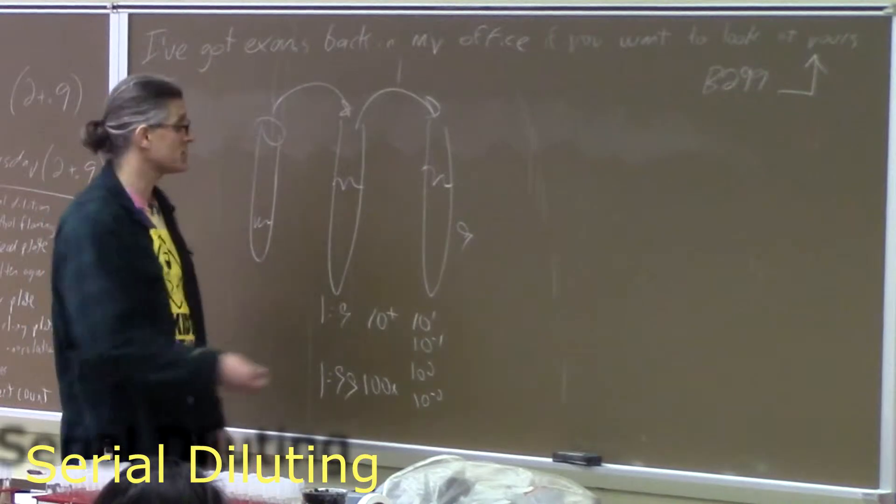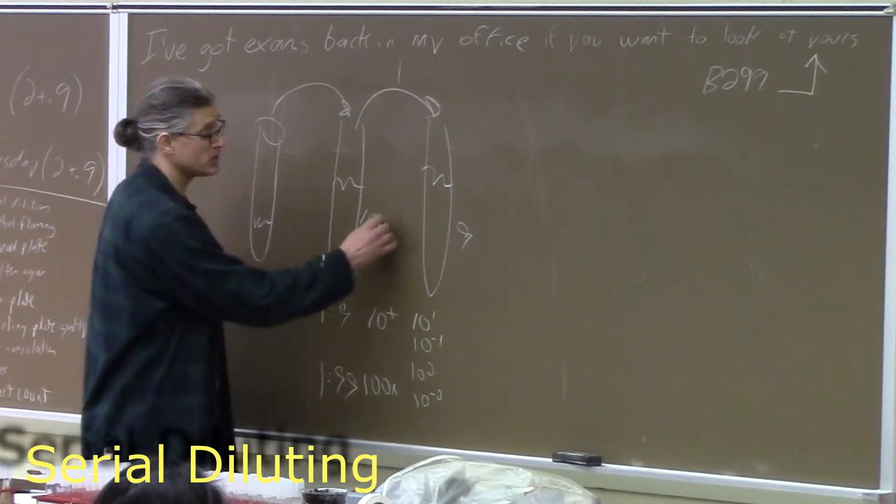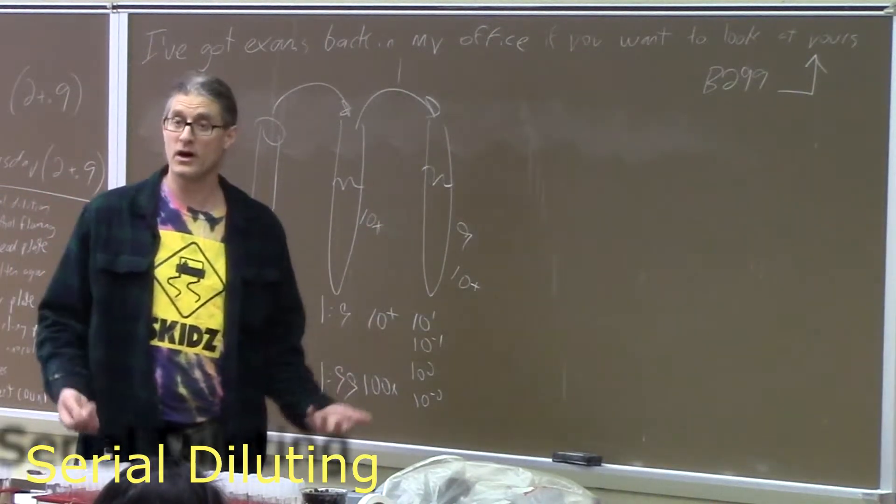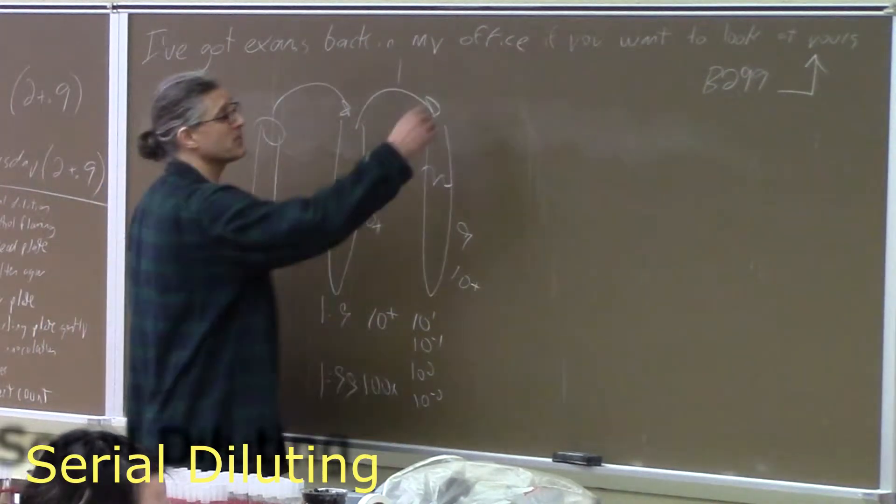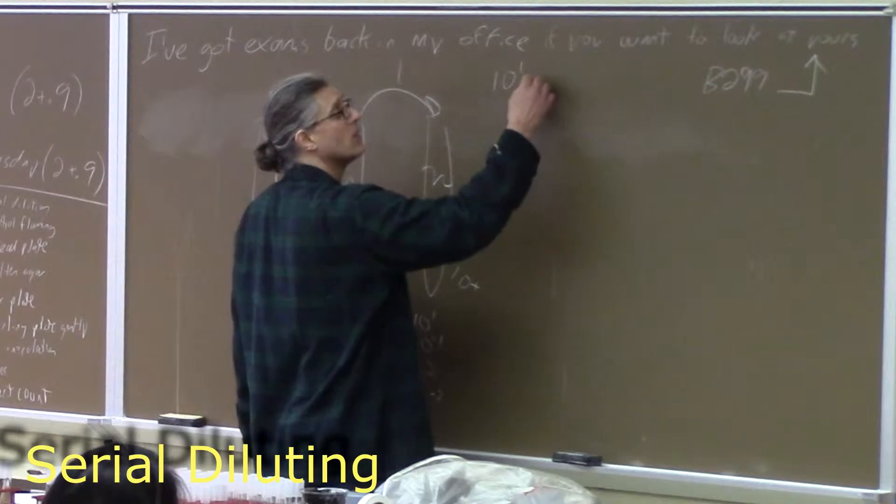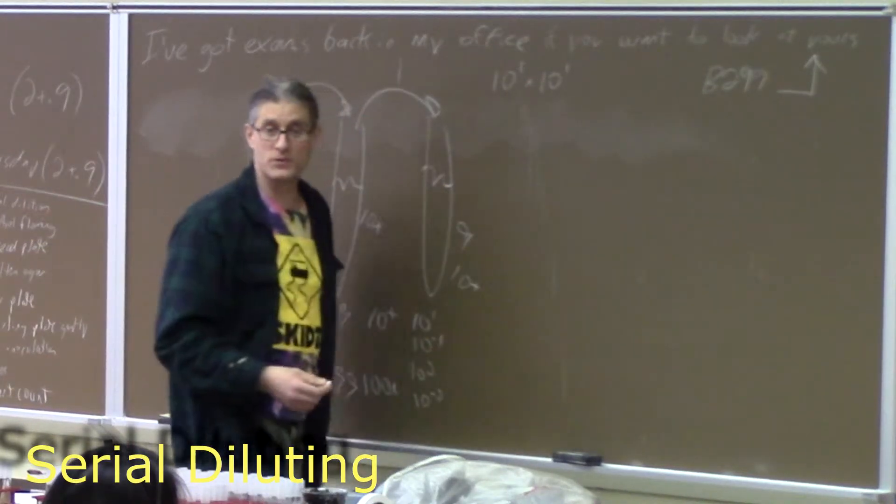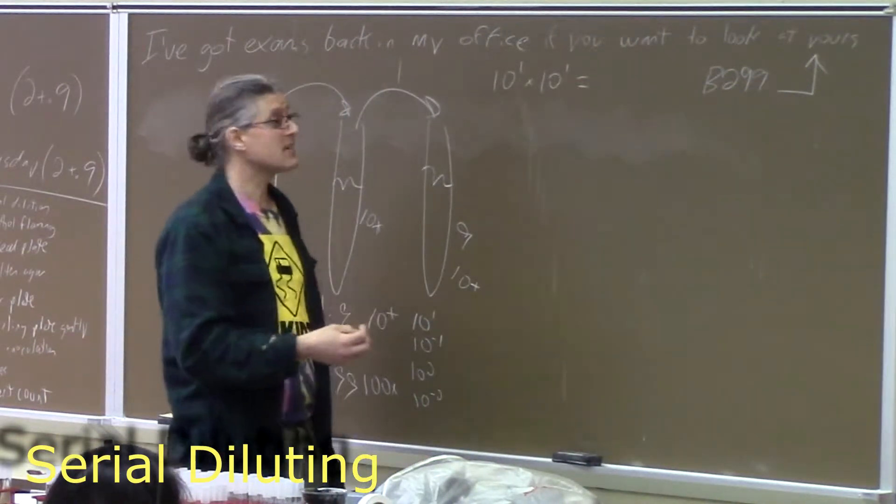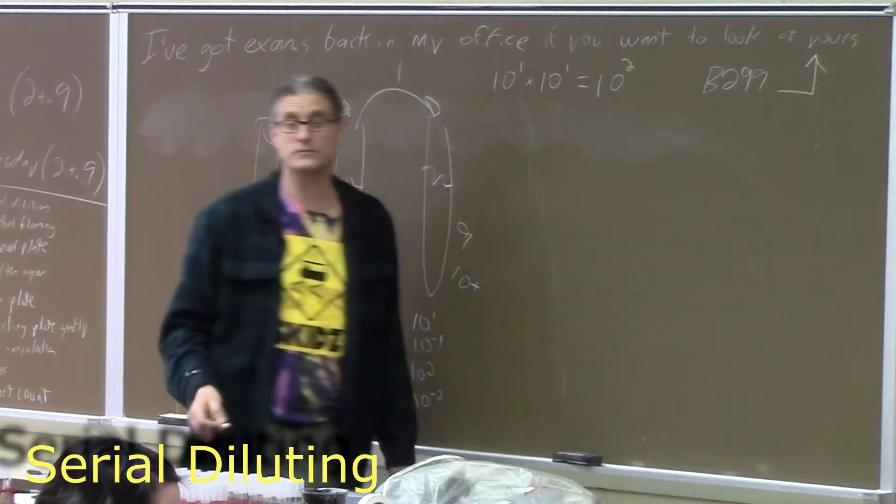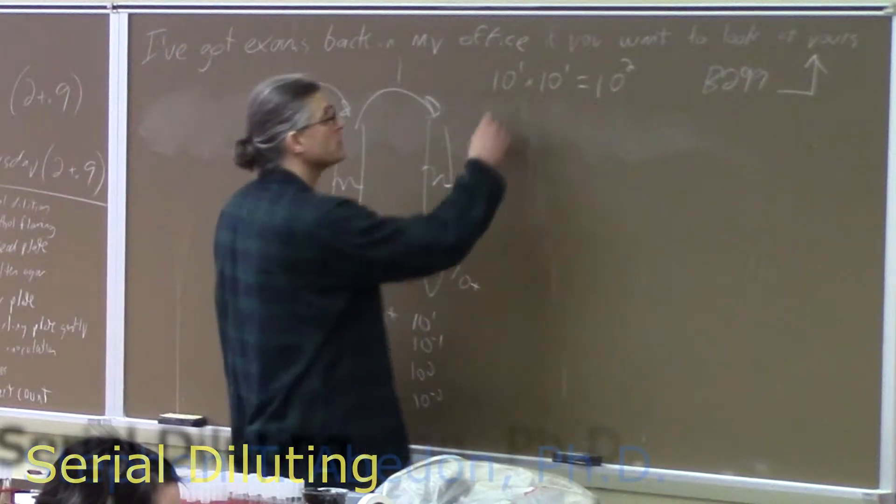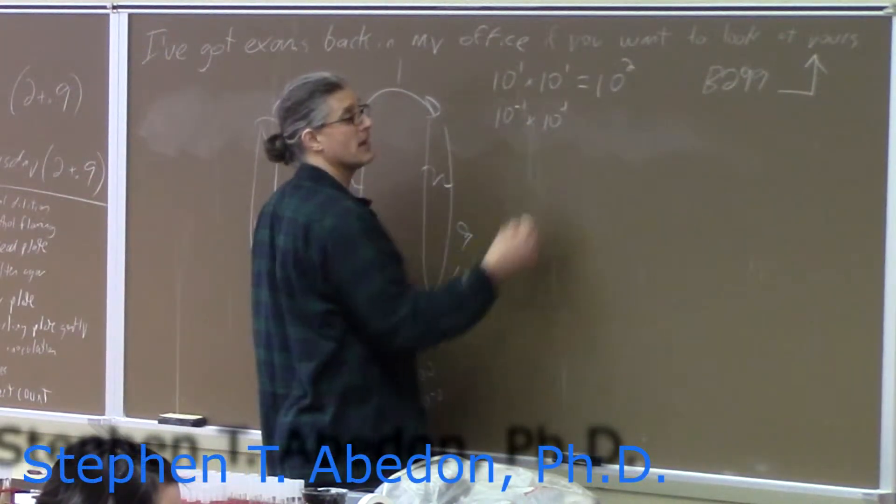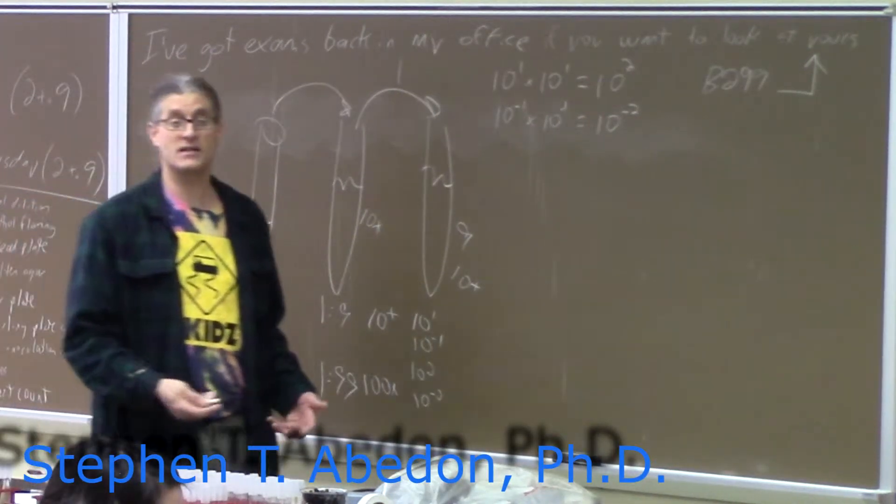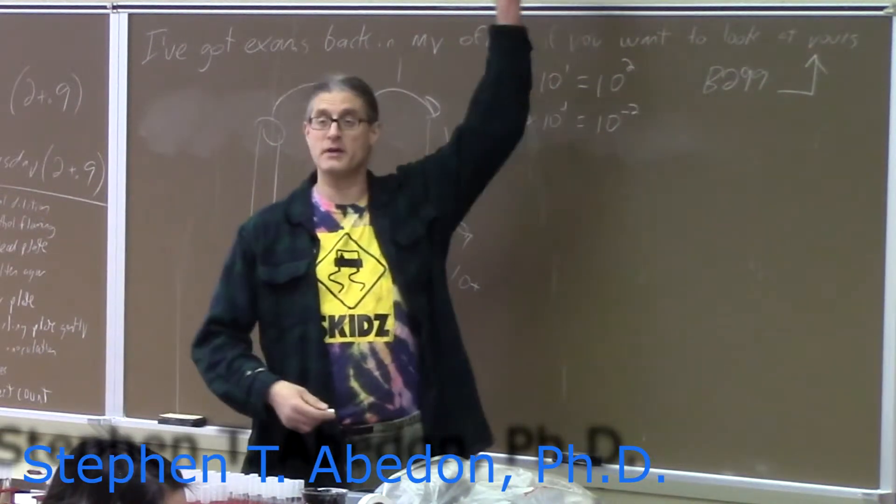Now, the nice thing about serial dilutions is that if you did a ten-fold dilution here and a ten-fold dilution here, then at this point you've actually got a ten times ten, 100-fold dilution. Now, it's nice to play with decimals. So if we did a 10 to the 1-fold dilution and a 10 to the 1-fold dilution, with decimals that would be just add together, with exponents, just add together the exponents and it's 10 to the 2. Or if you'd like to work with negative exponents, which is my preference, 10 to the minus 1 times 10 to the minus 1 is 10 to the minus 2. But either way, what you've got is a 100-fold change, whether 100-fold bigger or 100-fold smaller.